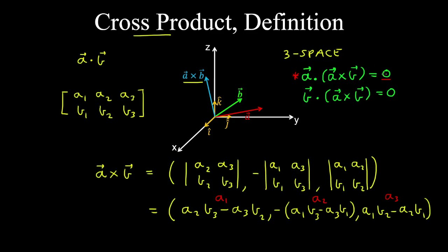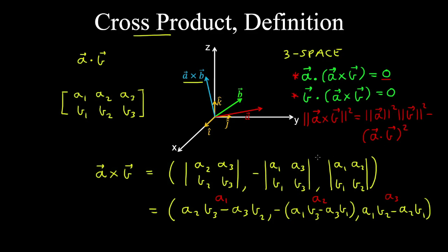I'll leave that for you to do as an exercise, and you can verify the second result in a similar way. Similarly, you can verify Lagrange's identity: the squared norm of the cross product between two vectors is equal to the norm of a squared times the norm of b squared, minus the dot product between a and b, squared. This will be useful to make some geometric interpretations of the cross product.